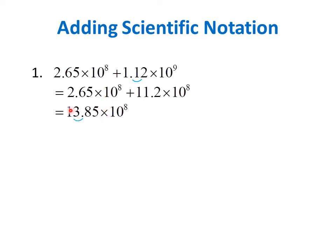2.65 plus 11.2 is 13.85, and then we copy times 10 to the 8. Notice that the coefficient of the sum has 2 digits before the decimal point. So to write the final answer in scientific notation, we have to move the decimal point 1 place to the left. So we get 1.385, and the 8 becomes 9 since it is followed by 5 — so 1.39 times 10 to the 9, because we moved the decimal point 1 place to the left, making the exponent larger by 1.